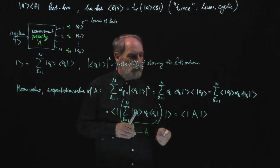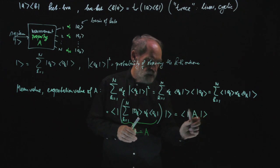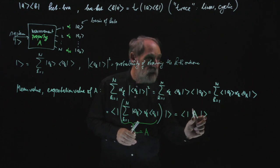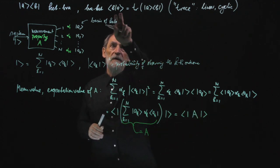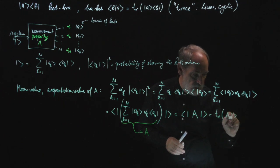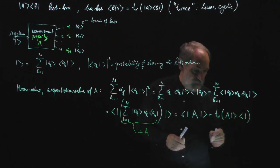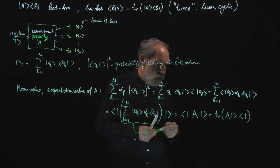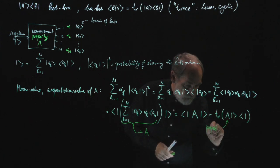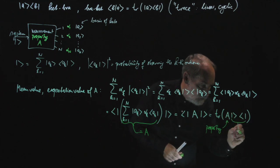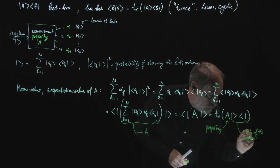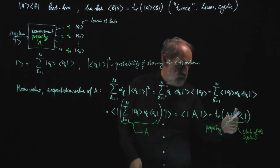We can read this as a bra multiplying the ket obtained by applying operator A to the state ket — which is exactly the basic structure in the trace. So the expectation value is the trace of the ket-bra formed by the operator A times the state ket and the state bra. In this trace, one factor refers to the property and the other factor — the ket-bra from the state ket and state bra — refers to the state of the system.